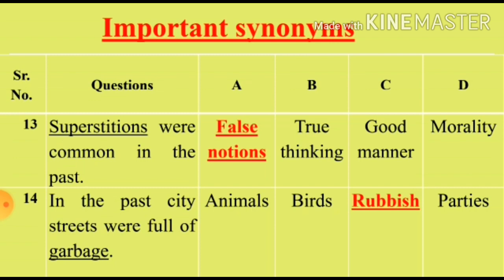Question 13: 'Superstitions were common in the past.' We will see the synonym for the word 'superstitions'. Option A: False notions (ghalat nazriyat). Option B: True thinking (haki ki soch). Option C: Good manner (achya tariqa). Option D: Morality (eklakiyat). Options C and D are irrelevant. We will select from Option A and B. Option A, False notions, is the right synonym for the word 'superstitions'.